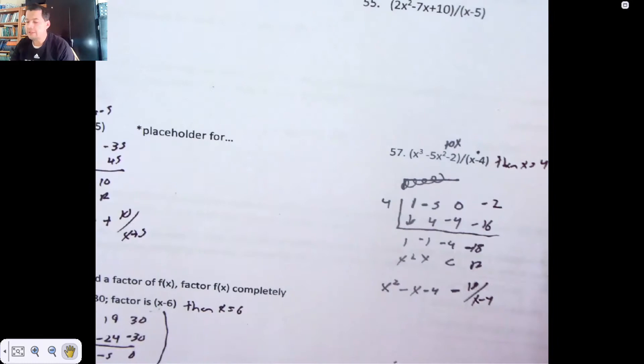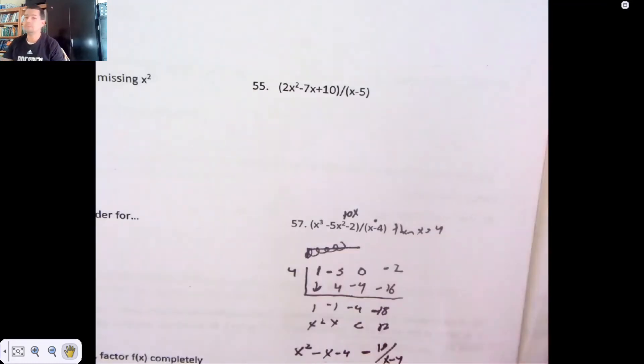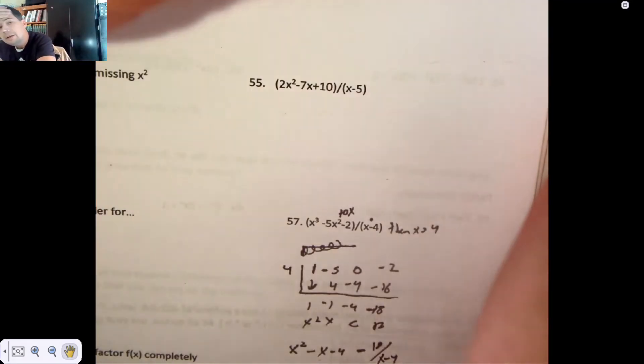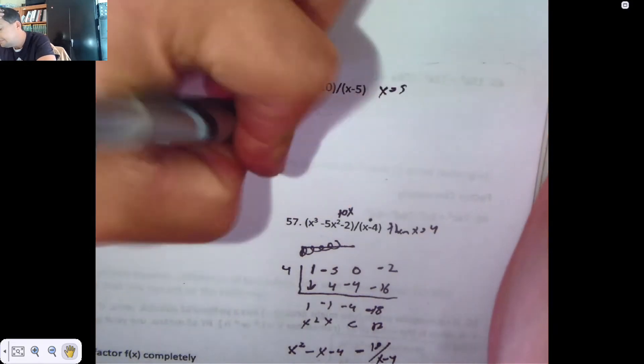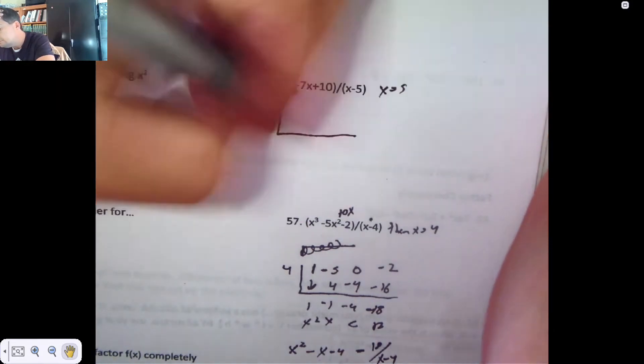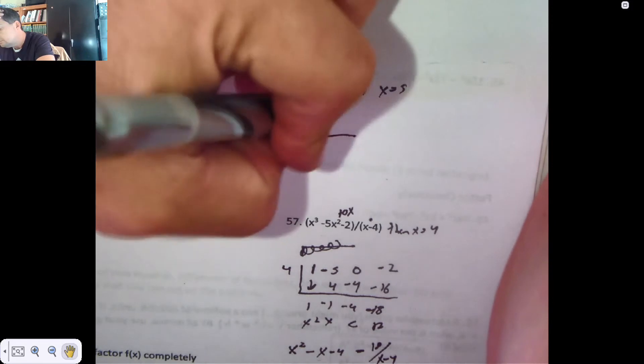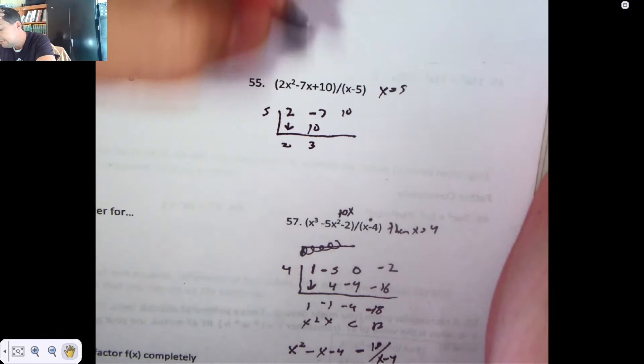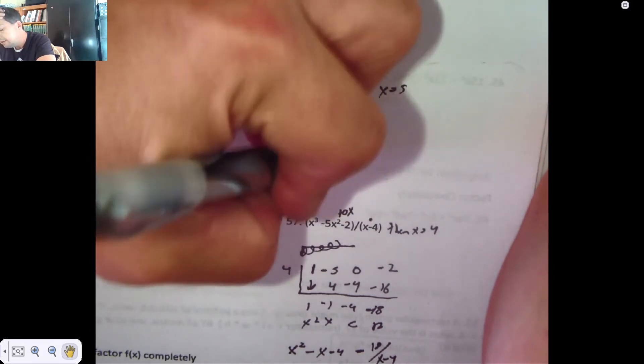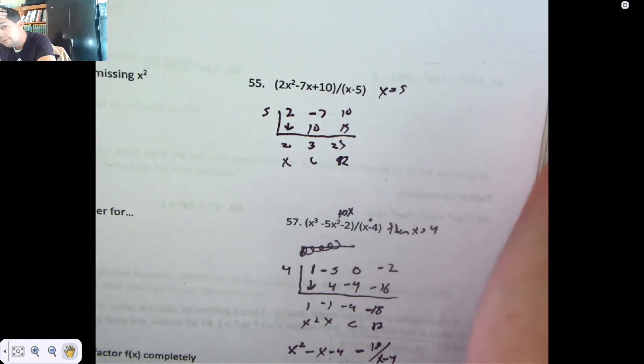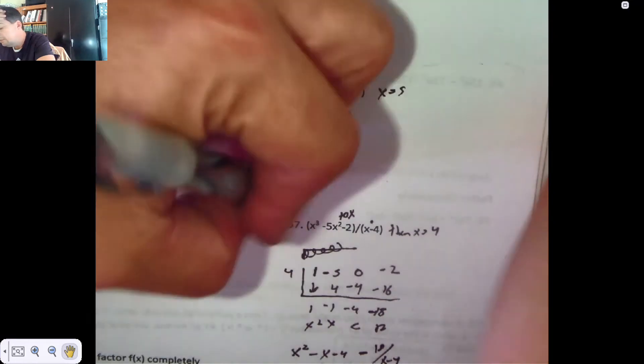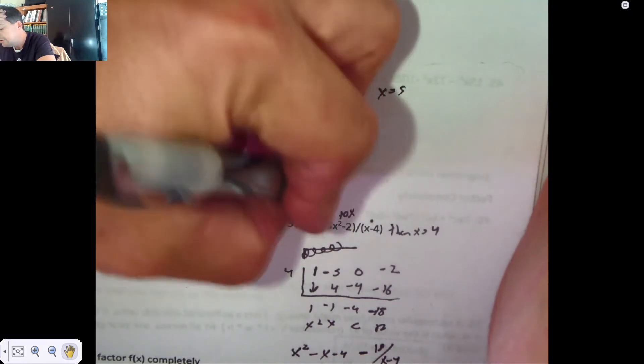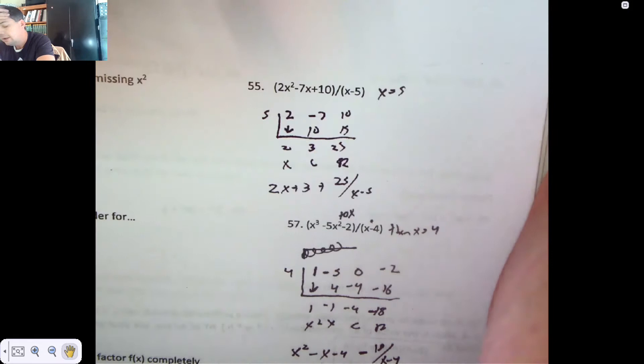Alright. Two more synthetics, and then I get to do long division. So here I'm dividing by x minus 5, which means x is 5. And I drop, and I multiply and add. And I multiply and add. There's my remainder, my constant, and my x. So when I divide 2x squared minus 7x plus 10, I am left with 2x plus 3 plus 25 pieces of x minus 5.